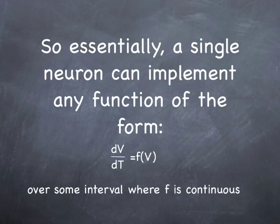So essentially, a single neuron, one neuron in your brain can implement any function of the form dv/dt equals f of V. It can implement any first order differential equation over some interval, as long as f is a continuous function over some interval, which is kind of cool.